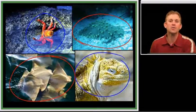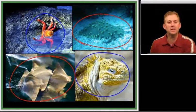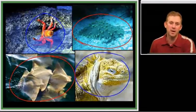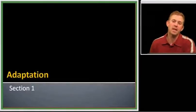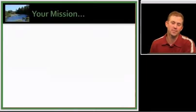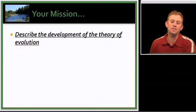How did the ideas and the theories of natural selection and evolution come about? Adaptation, section one. In this section, we're going to describe the development of the theory of evolution.